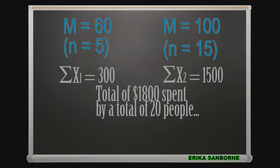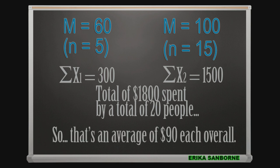The overall mean for all 20 shoppers then is $1,800 divided by 20, or $90 per shopper.